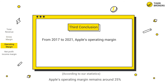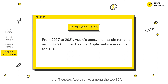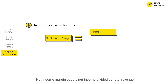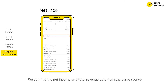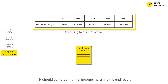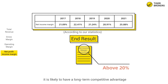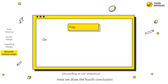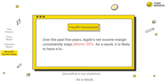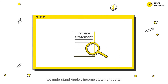Apple consistently ranked among the top 10 percent in the IT sector for operating margin. So we can draw the conclusion: from 2017 to 2021, Apple's operating margin remains around 25 percent, ranking in the top 10 percent of the sector. For Apple's net income margin — net income divided by total revenue — net income margin consistently staying above 20 percent indicates a long-term competitive advantage. Over the past five years, Apple's net income margin consistently stays above 20 percent, confirming this advantage.